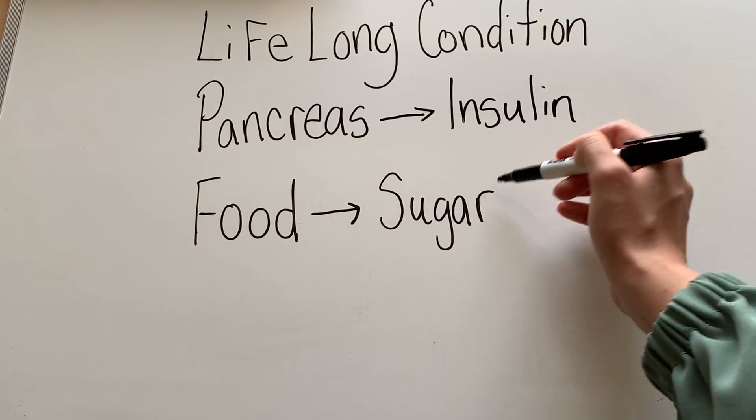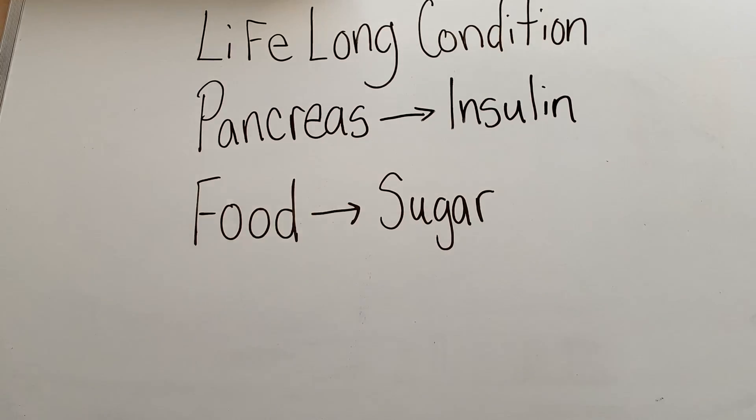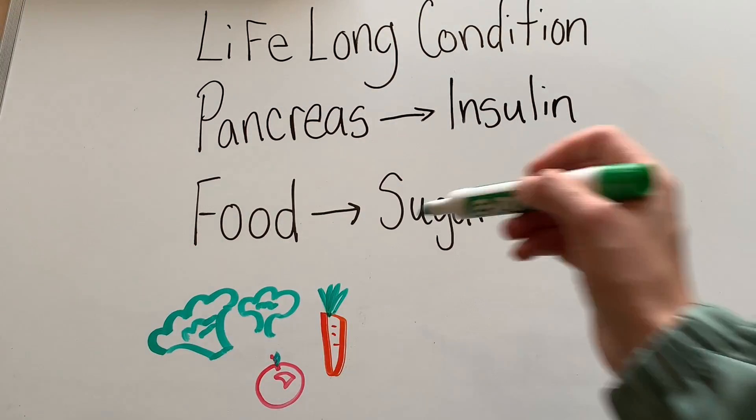Some foods we eat turn into sugar in our body and this gives us energy. So people manage type 2 diabetes by healthy eating, physical activity, and sometimes take medications if they're recommended by their doctor.